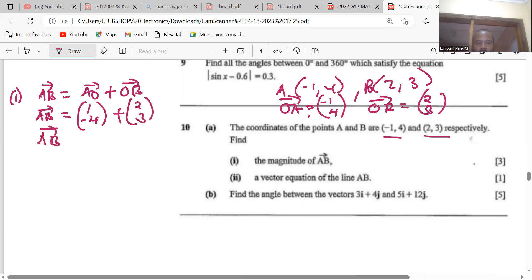So AB will give you (3, -1). Now getting the magnitude of this, the magnitude of AB will be equal to 3 squared plus (-1) squared. Everything you introduce a root, this will give you 9 plus 1. Therefore, AB in terms of this magnitude will be the root of 10, 10 units.